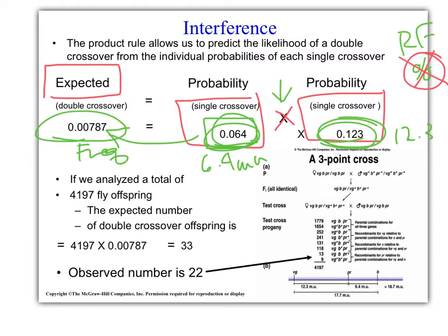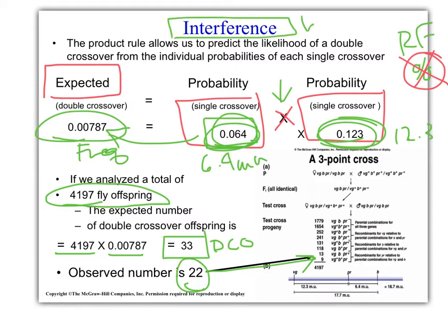If we looked at a total of 4,197 offspring, the frequency of double crossovers we'd expect, multiply by the total to figure out a number, would be 33. We would expect 33 double crossovers. But what we actually observed was only 22. We know there was some interference happening. Something blocked some of the double crossovers from happening. Otherwise, we would have had 11 more double crossovers.